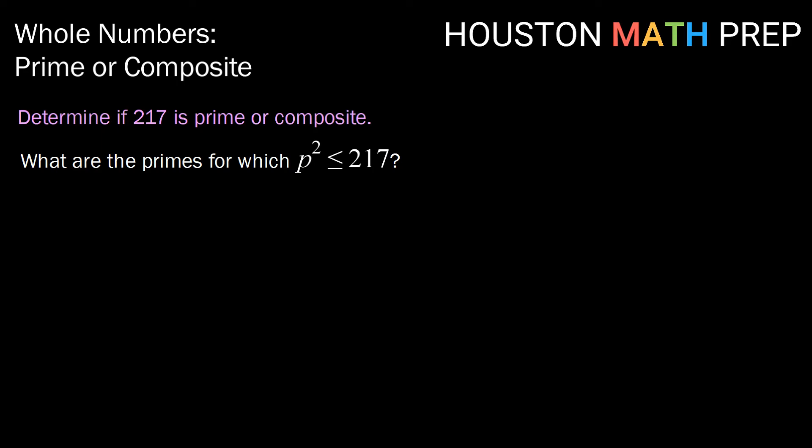We're going to be making the same list as last time and stop when we get to our first p squared greater than 217. So that list includes 2, 3, 5, 7, 11. 13 squared which is 169 is now included. The next prime after 13 is 17, but 17 squared is 289 so 17 will not be included in our list.